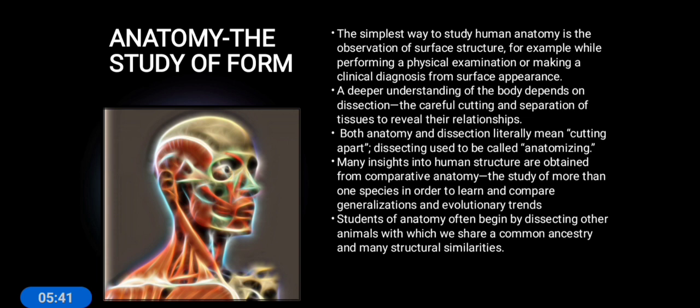Many insights into human structure are obtained from comparative anatomy. You cannot generalize your observation from just one species. You need to compare with other species — taking perhaps a thousand or more samples — so you can compare anatomical ideas and arrive at generalized results. Comparative anatomy is the study of more than one species in order to learn generalizations and evolutionary trends.